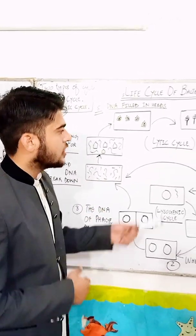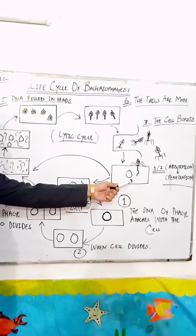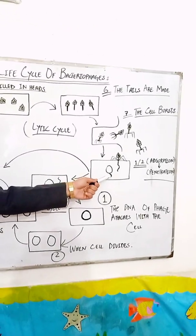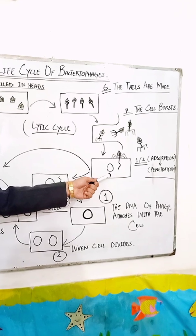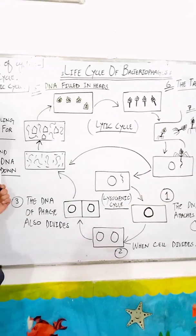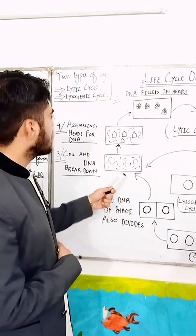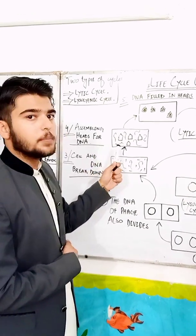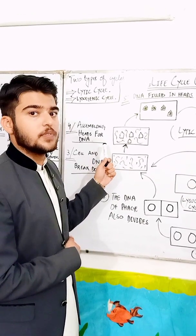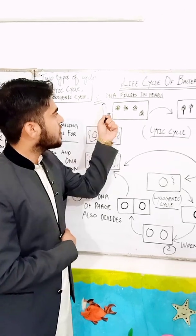First, we discuss the lytic cycle. When a bacteriophage sits on the cell and injects its DNA into the cell. In the third step, the cell and DNA are broken down. In the fourth step, assembling of heads are made for DNA to be filled.